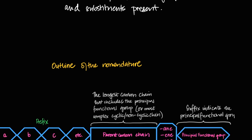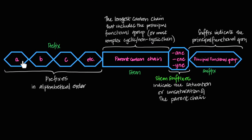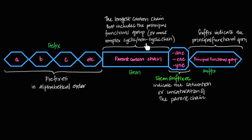The name of an organic compound has multiple parts: a prefix, a stem, a stem suffix, and a suffix. Starting from the right end, the suffix tells me the principal functional group. Just before that, the stem suffix tells me whether carbon-carbon bonds are single, double, or triple. The stem represents the longest carbon chain that includes the principal functional group, or the most complicated cyclic or non-cyclic chain — that's what we call the parent carbon chain.